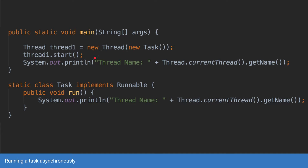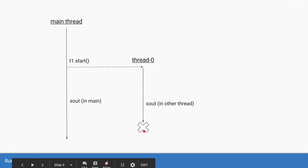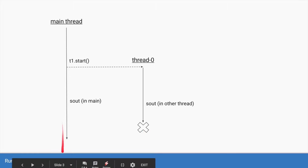Then just start the thread. The way to visualize this is: there is a main thread which performs its operations from top to bottom. At a certain point it will call thread.start, and Java will create a thread named thread-0. This thread will do its own operations, and once those operations are done, Java will kill that thread and the main thread will keep going.